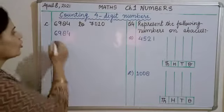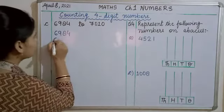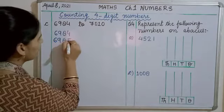Aur ye three digits jo hai baqi ki wo sab same rhenne wale hai. Six thousand nine hundred eighty five. Only five has changed. Six thousand nine hundred eighty six.